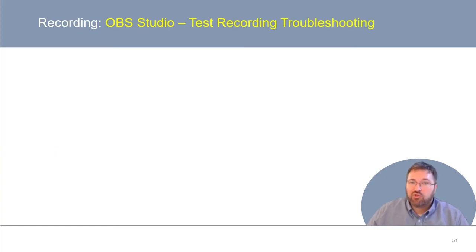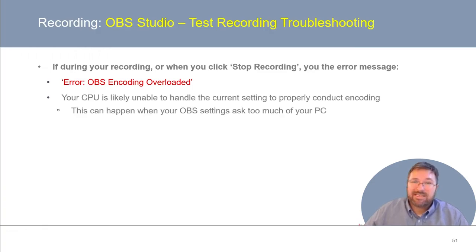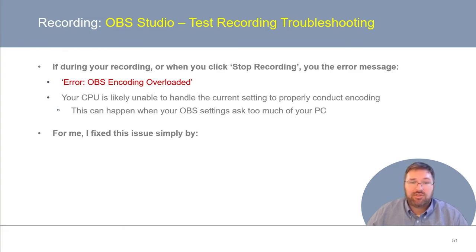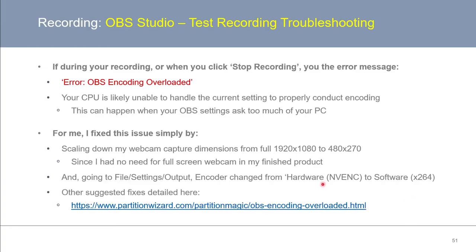Now let's briefly talk about test recording troubleshooting. If during your recording or when you click Stop Recording you see the error message 'Error: OBS encoding overloaded,' this basically happens when your OBS settings are asking too much of your PC. For me, I was able to fix this by scaling down my webcam capture dimensions from a full 1920x1080p to 480x270p. Probably the most important fix was going to File, Settings, Output and changing my encoder from Hardware NVEC to Software 264. If this doesn't address your problem, check out this link for a more complete list of possible troubleshooting steps to overcome this error.